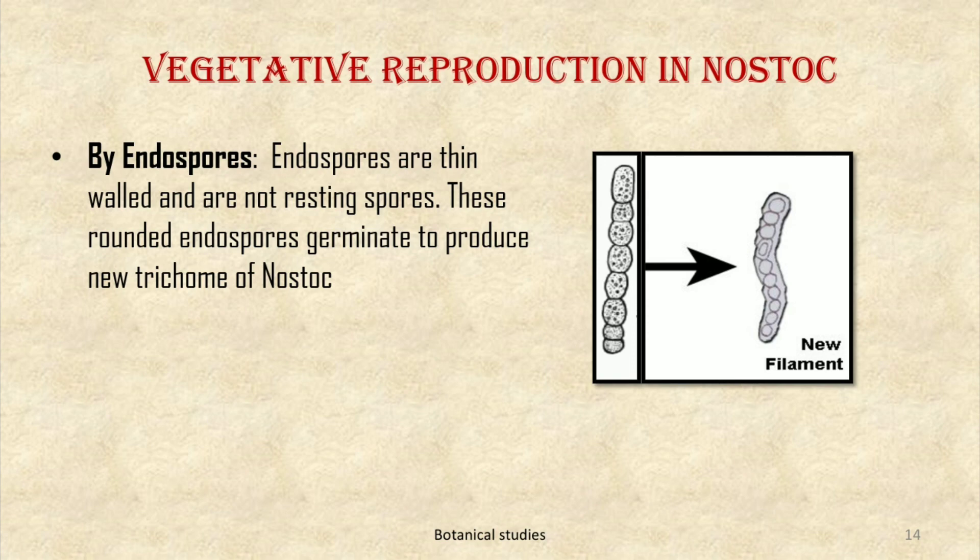Vegetative reproduction by endospore formation: the endospores are thin-walled and not resting spores. These rounded endospores germinate to produce a new trichome of Nostoc. This is all about Nostoc — hope you have understood the concept.